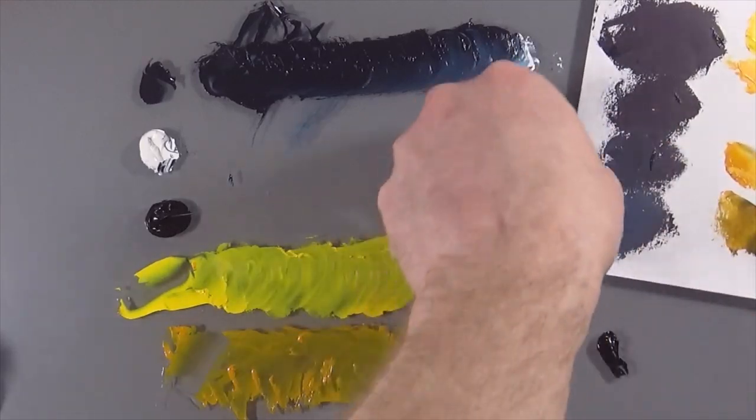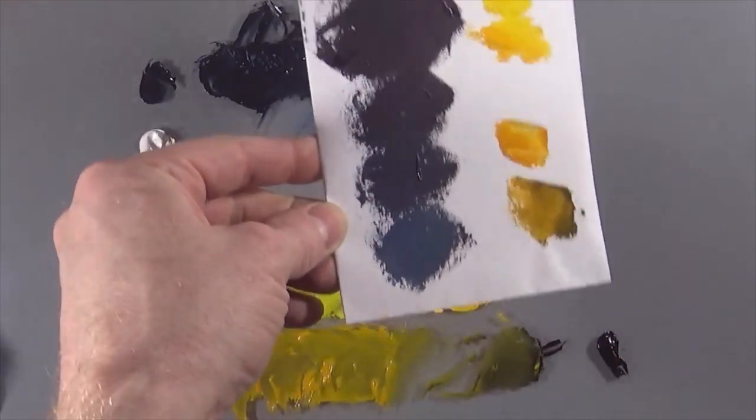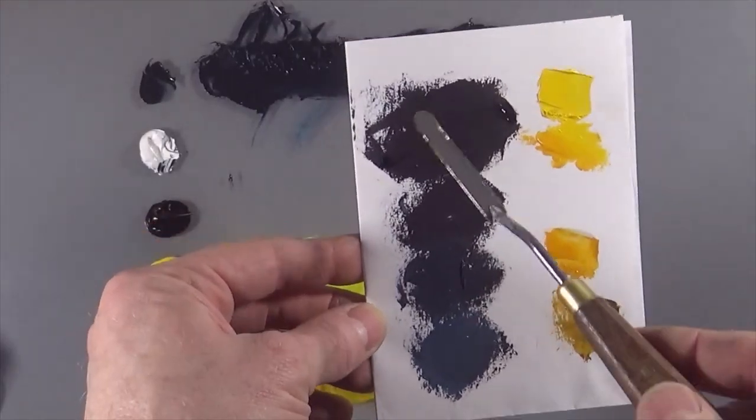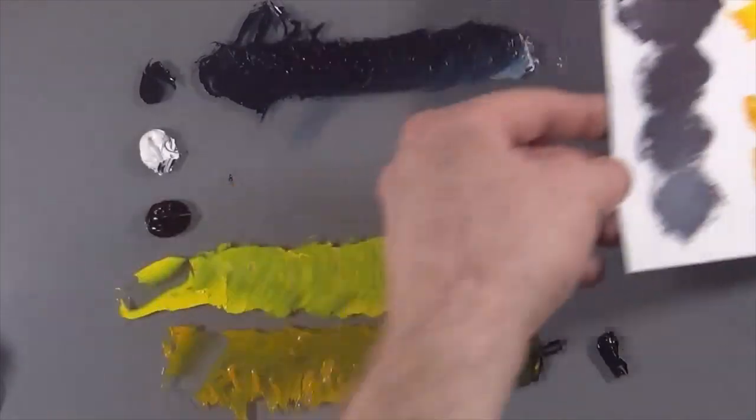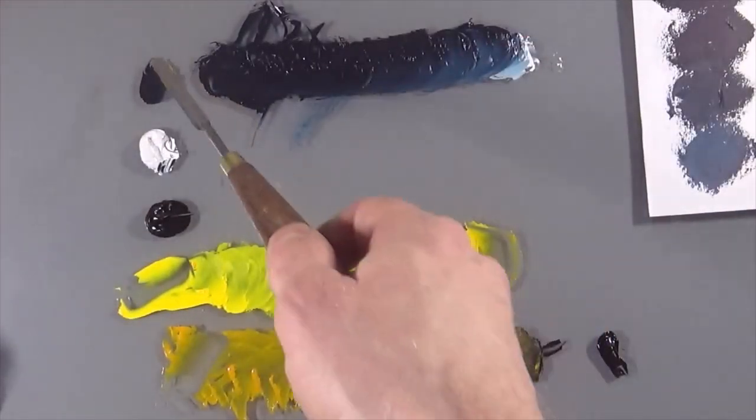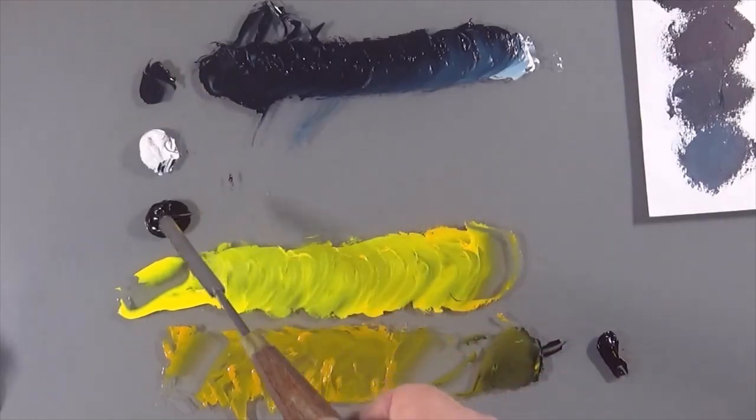So sometimes it's useful just to get yourself a little scrap of paper to see what this is going to look like when it's on a white background, particularly if you're dealing with very transparent colors. But there we go. Indigo, titanium white, ivory black, cadmium yellow, and chrome orange.